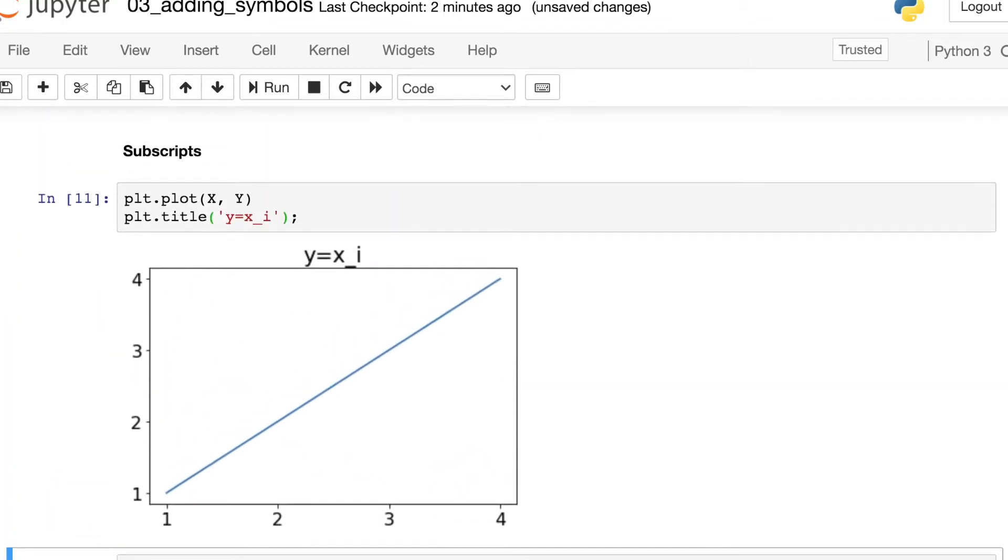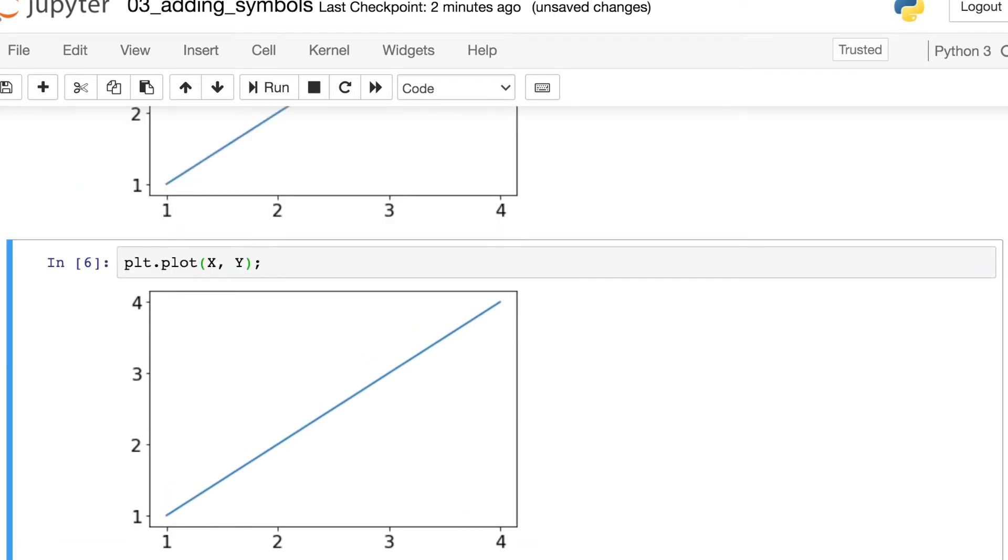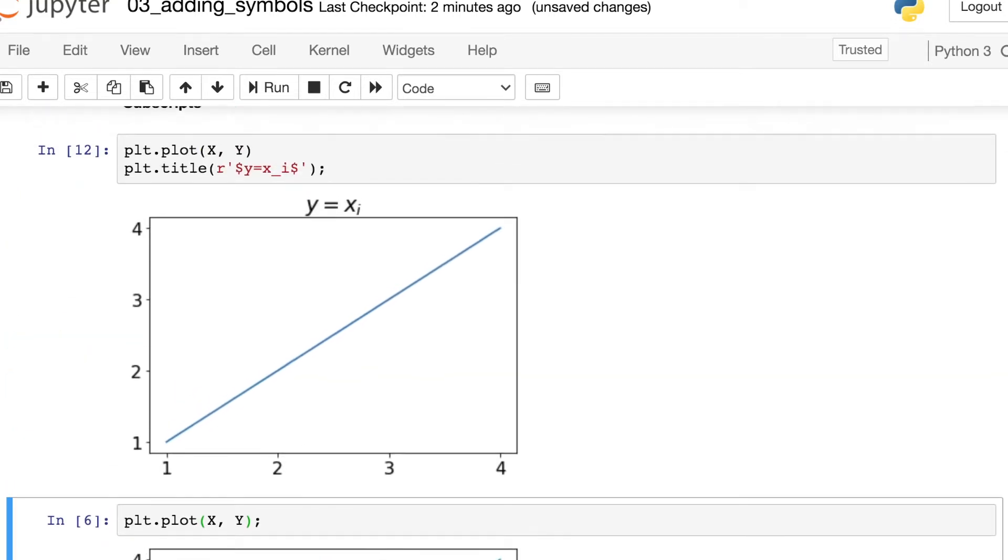Again, this kind of gets the point across. But if we want to convert this using TeX, we just need to use the prefix R and then two dollar signs around this equation. Now we see Y equals X sub I.